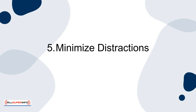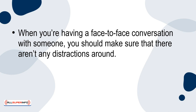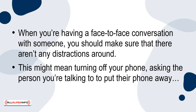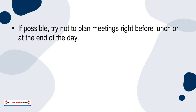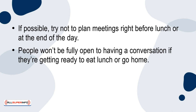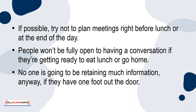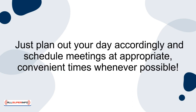5. Minimize distractions. When you're having a face-to-face conversation with someone, you should make sure that there aren't any distractions around. This might mean turning off your phone, asking the person you're talking to to put their phone away, or shutting your office door during one-on-one meetings. If possible, try not to plan meetings right before lunch or at the end of the day. People won't be fully open to having a conversation if they're getting ready to eat lunch or go home. Just plan out your day accordingly and schedule meetings at appropriate, convenient times whenever possible.